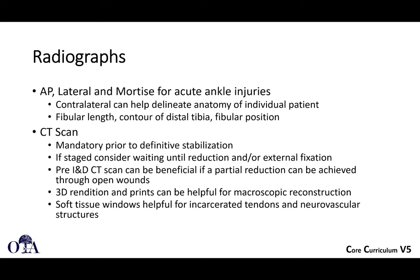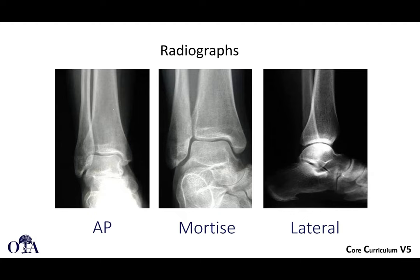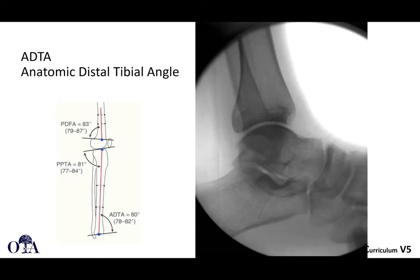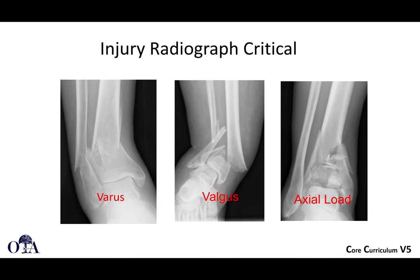Standard radiographs include AP, mortise, and lateral views. We measure the lateral distal tibia angle and anatomic distal tibia angle for normal anatomy. The injury radiographs showing abnormal anatomy are critical—they hint at what happened mechanically at the point of impact. You may see a varus or valgus injury, or an intact fibula with an axial load injury where the talus is driven up into the tibia, causing dramatic shortening.